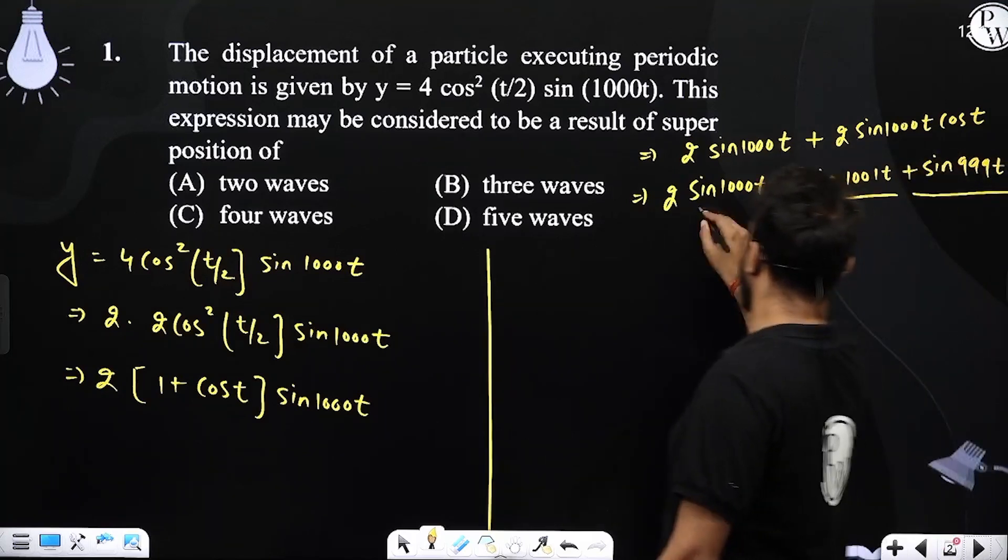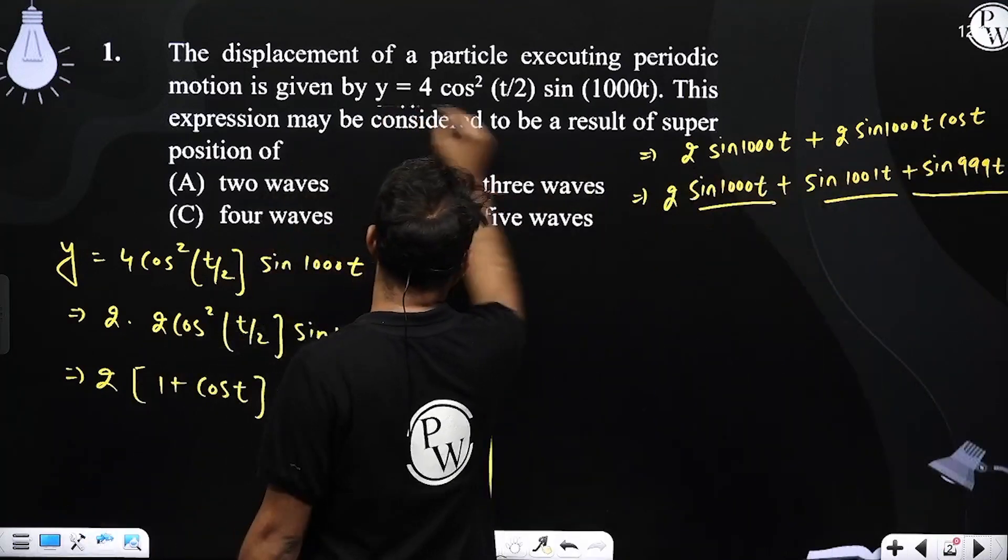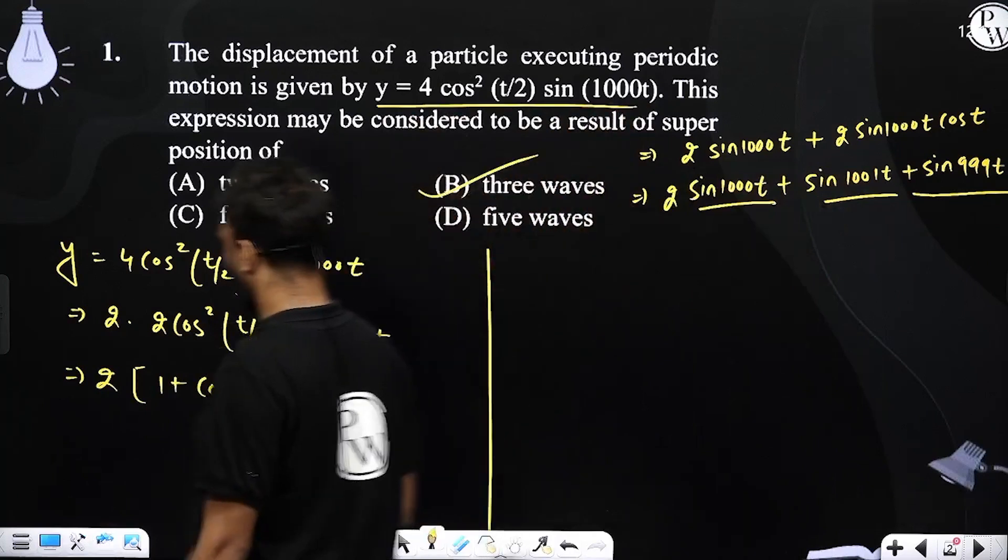Now there are 3 expressions of SHM, means this equation of oscillation is made up of 3 waves or 3 SHMs.